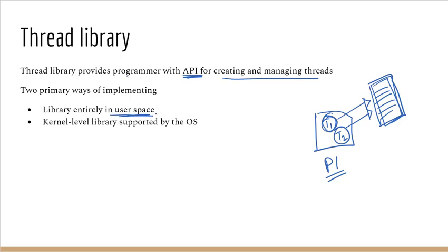There are two implementations of a thread library. One is entirely in the user space — a user-level thread library. This thread library provides the scope or facility to users, meaning applications can create and manage threads entirely in user space without involving the OS kernel.